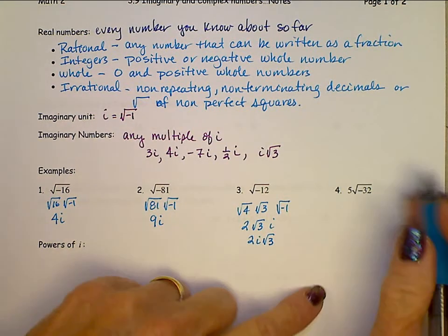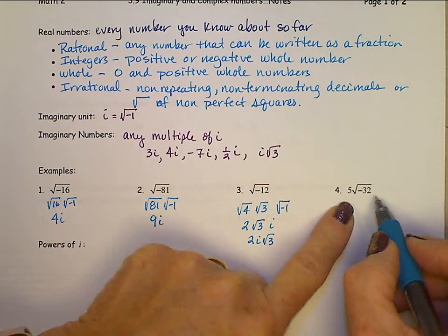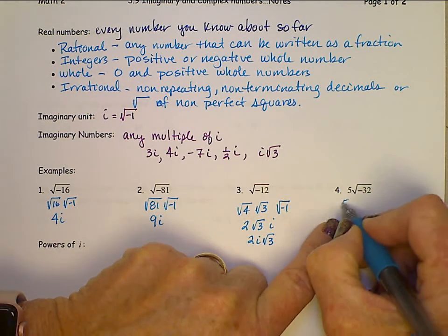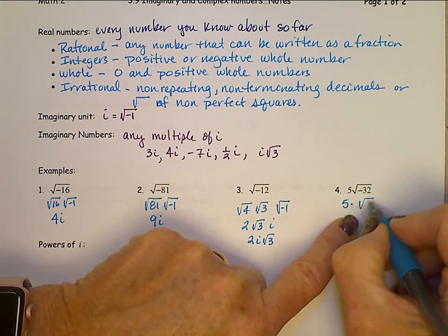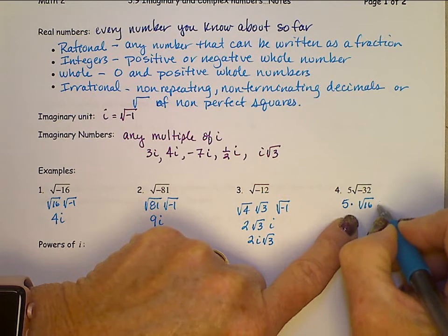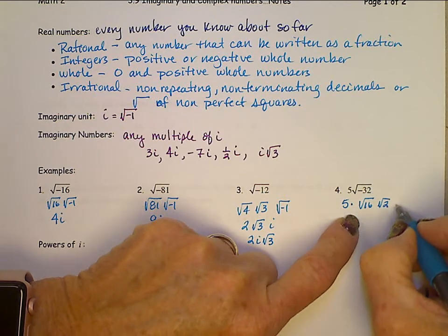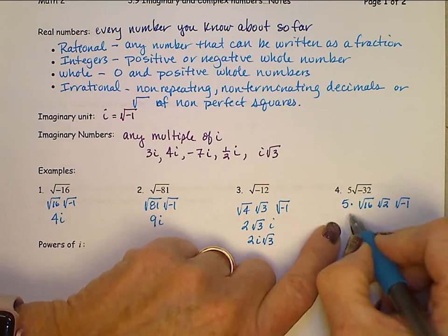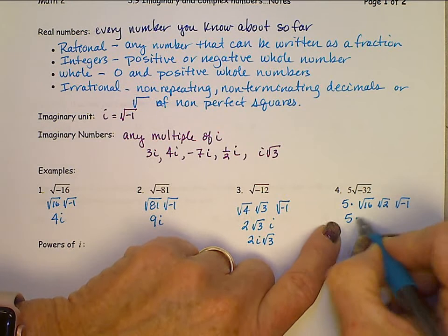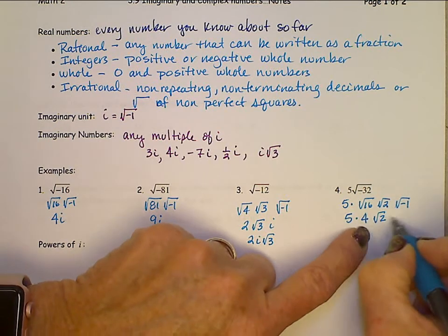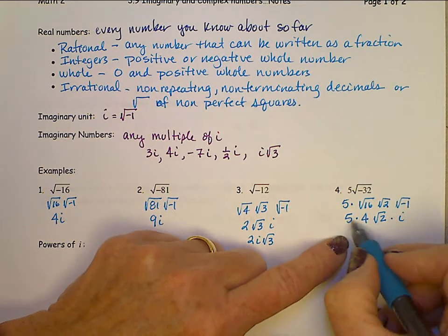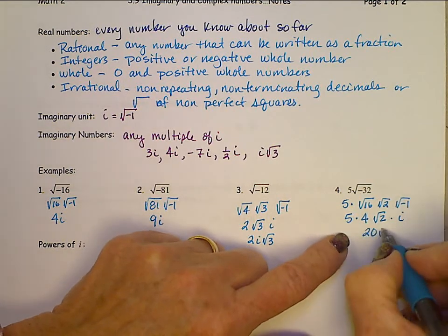For the last example, looking at 32: square root of 32 is square root of 16 times square root of 2, and then square root of negative 1. This gives us 5 times 4, times square root 2 times i — wait, that's square root 16 is 4, so pulling this all together we'll have 20i square root 2.